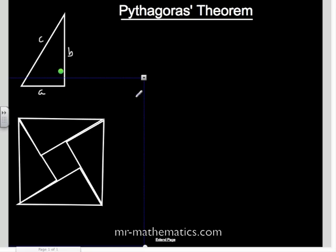So we're going to label the lengths. Again, the hypotenuse is on the outside, so we'll call that length C, and the shorter side B and the shortest side A. So the length of the square in the middle must be B minus A.